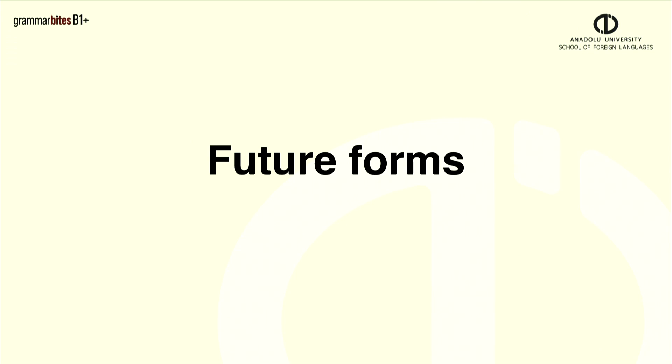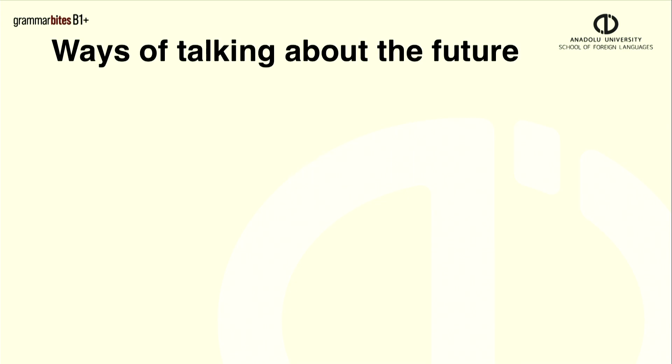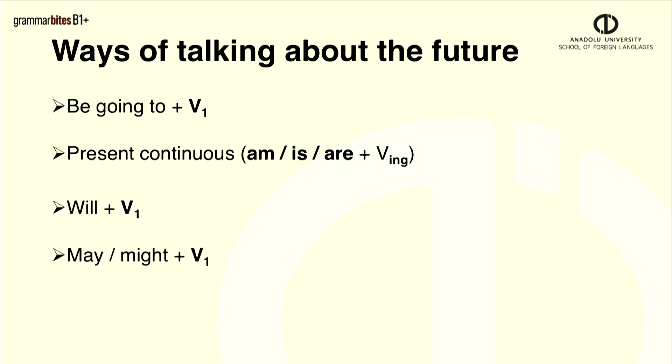Hello, everyone, and welcome to Grammar Bytes. We're going to study future forms today. To talk about the future, we have some tenses and modals with different functions. We can use be going to plus verb one, the present continuous which is am/is/are plus verb in the ing form, will plus verb one, may or might with verb one, and finally the future continuous which is will plus be plus verb in the ing form.